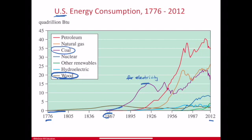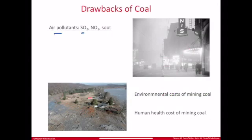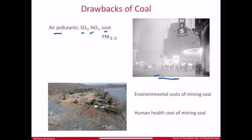One reason coal is popular not only in the US but worldwide is that deposits of coal are available by mining all over Earth. Now let's look at some drawbacks of coal. Beyond NO2 and SO2, there's also soot — larger particles known as PM2.5 and PM10, which are particulate matter. PM2.5 is especially dangerous because it's able to pass through lung tissue and into the bloodstream.